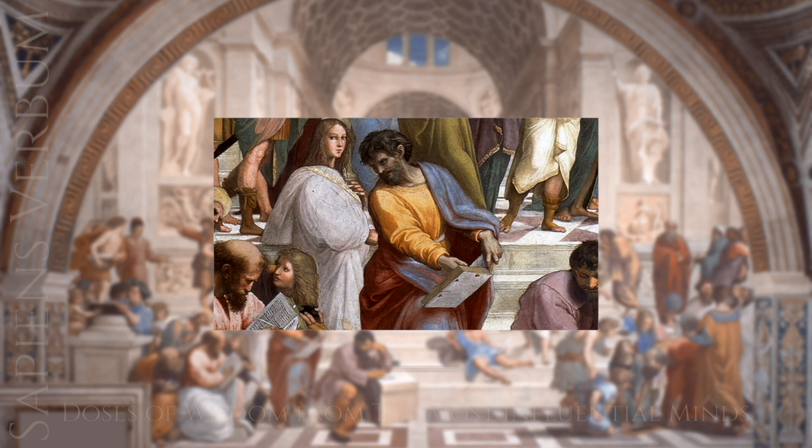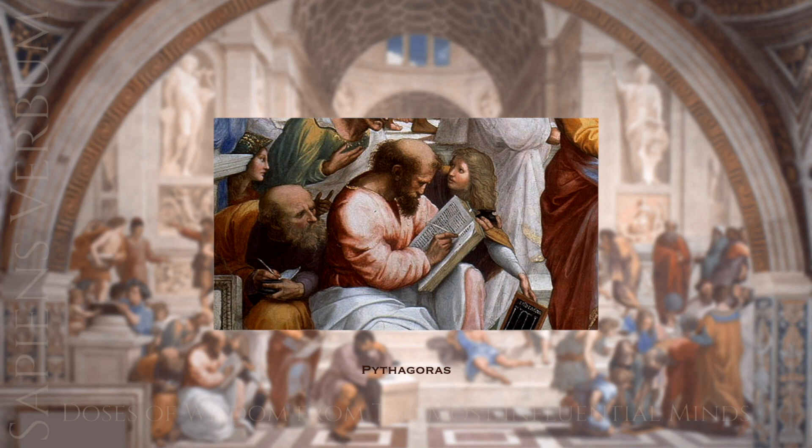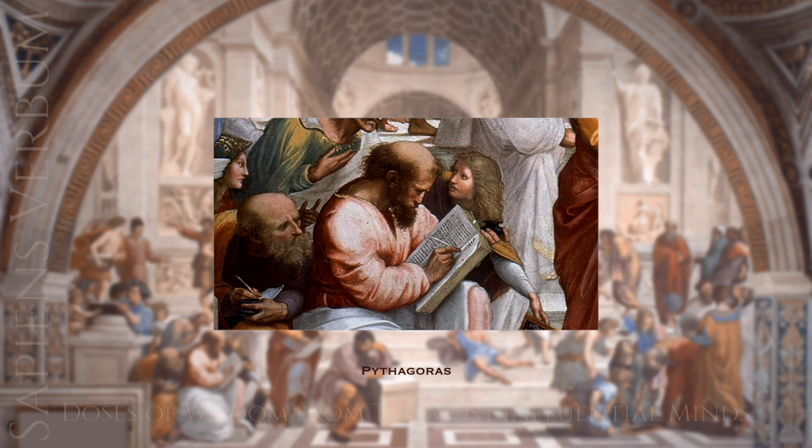Parmenides was a philosopher who believed in the concept of being as the only true reality. He rejected the idea of change and believed that everything was eternal and unchanging. Pythagoras was a philosopher and mathematician known for the Pythagorean theorem and the concept of the harmony of the spheres, which held that the movements of the planets could be understood in terms of musical ratios.